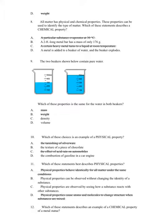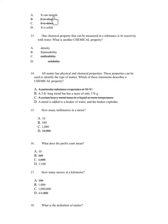Number 12. Which of these statements best describes an example of a chemical property of a metal? A. It can tarnish. B. It is silver. C. It is shiny. D. It is solid.